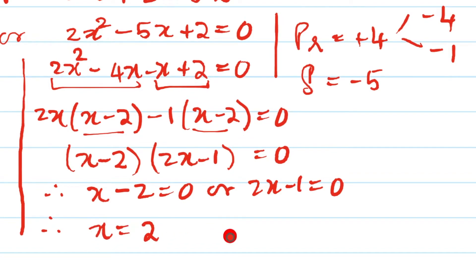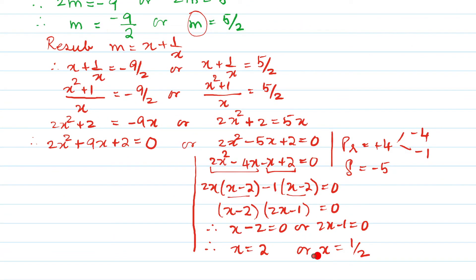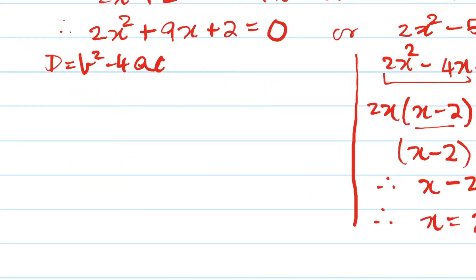We got these two values x = 2 or x = 1/2 = 0.5. Now here because you cannot factorize this using normal factorization we will have to use the discriminant which is b² - 4ac. We will have to first find the value of that.